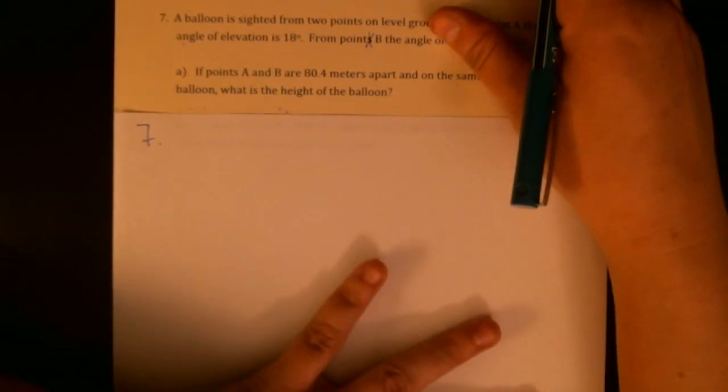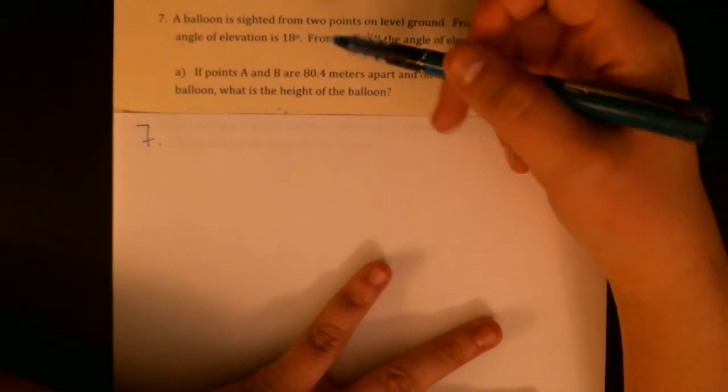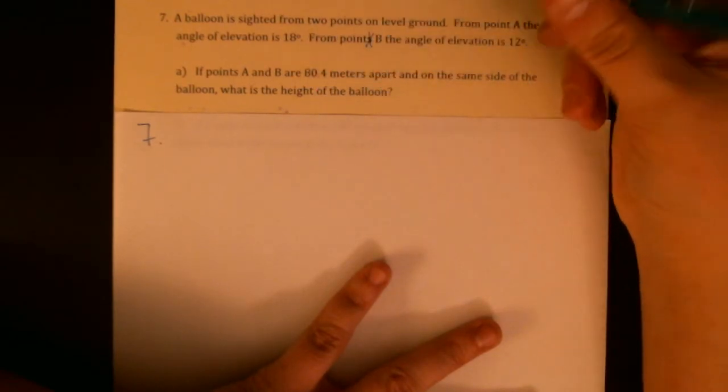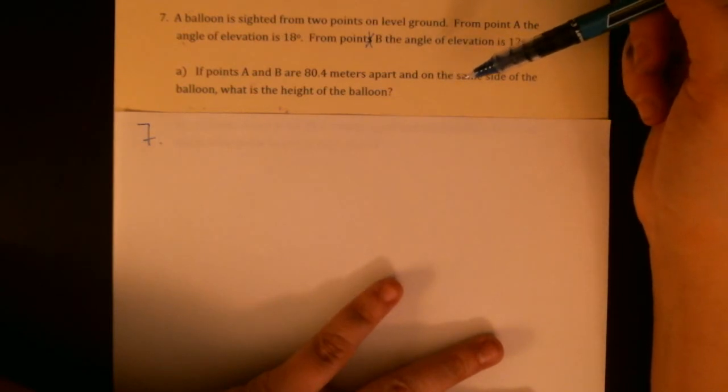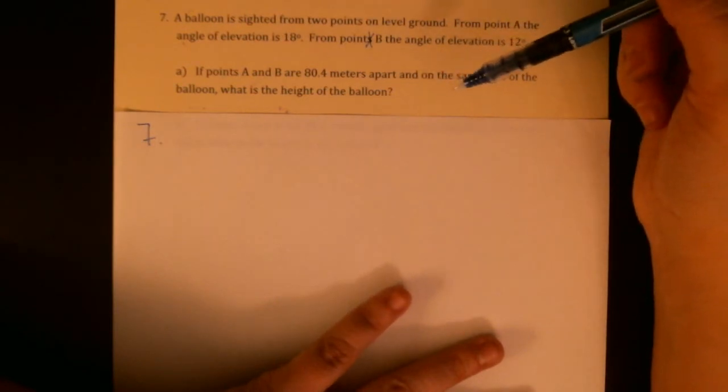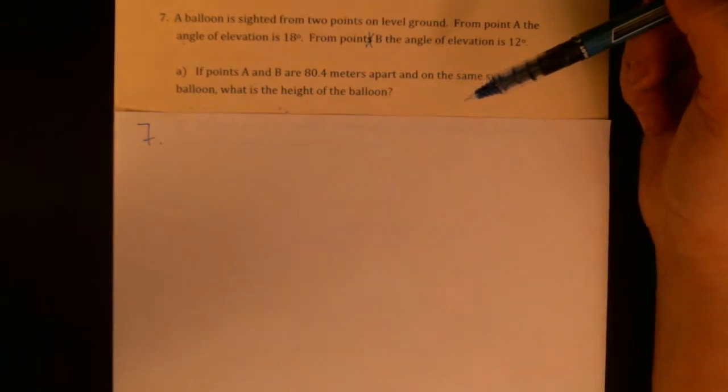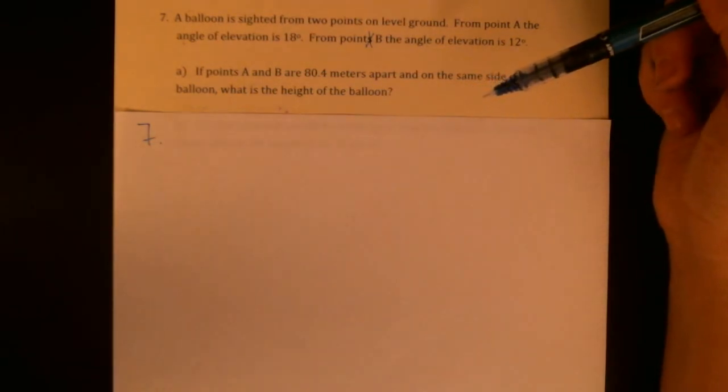Okay, so actually in both parts we're going to say that points A and B are 80.4 meters apart. What differs is that in part A, the two sightings are on the same side of the balloon. I'm going to be even more specific: they're in a straight line from the balloon on the same side.